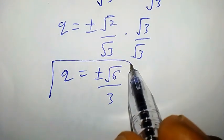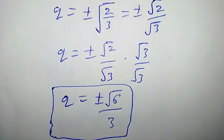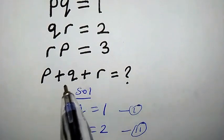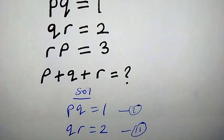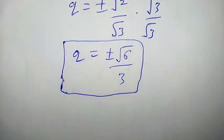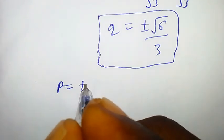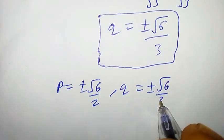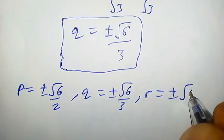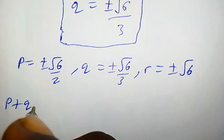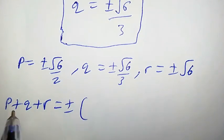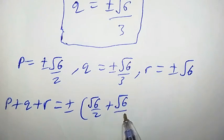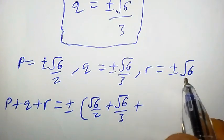Our goal is to find the value of P plus Q plus R. Since we already have all three values, we can add them together. The value of P is plus or minus square root of 6 over 2, the value of Q is plus or minus square root of 6 over 3, and R is plus or minus square root of 6.